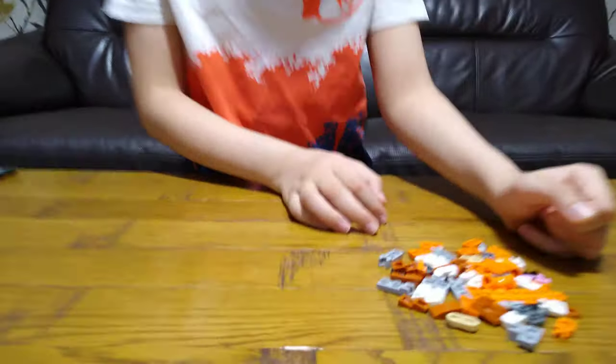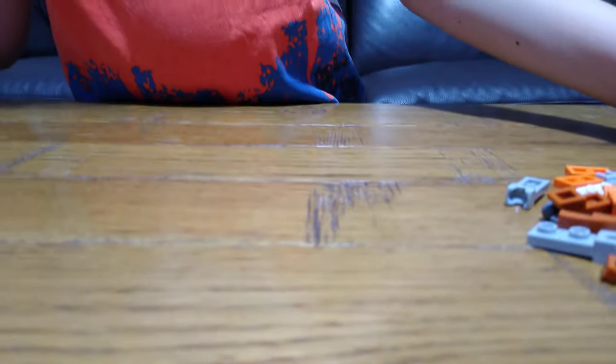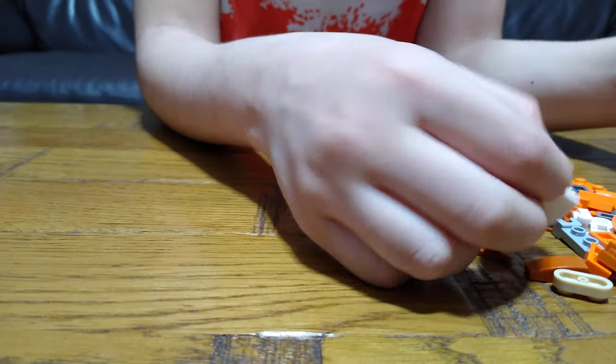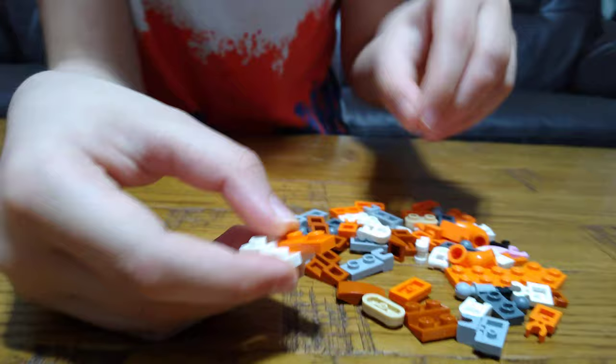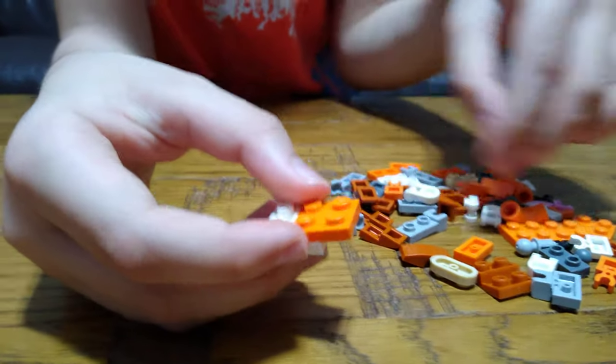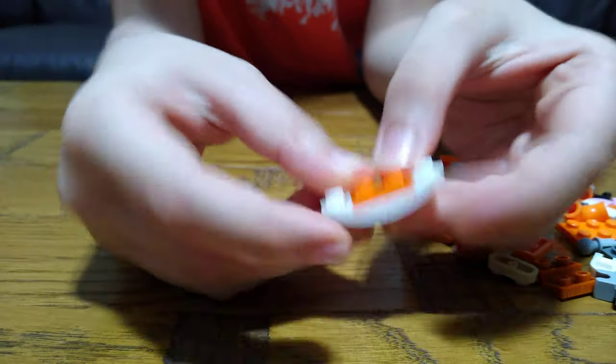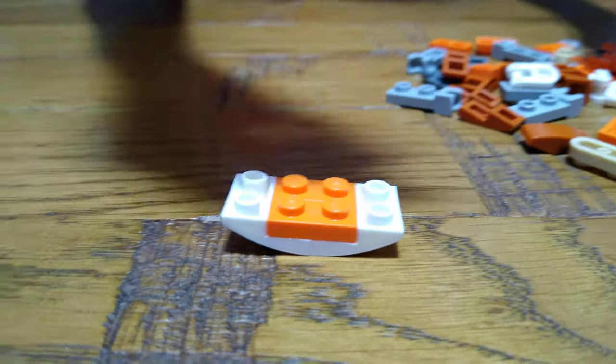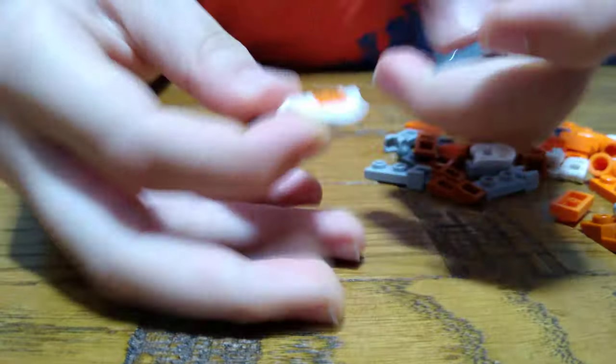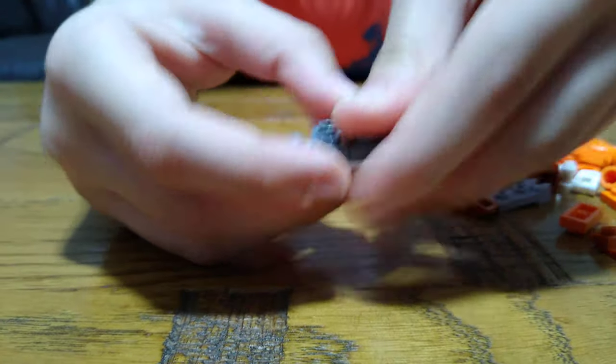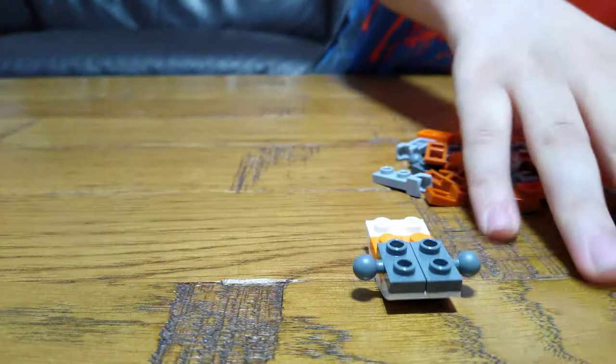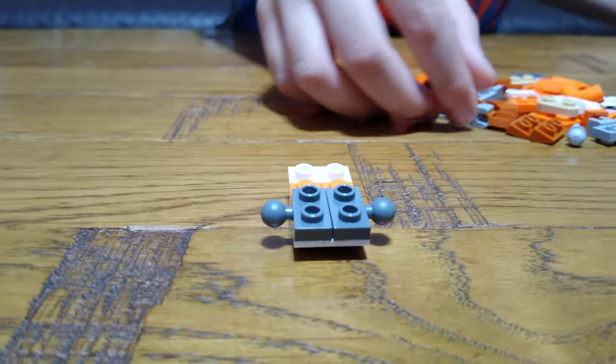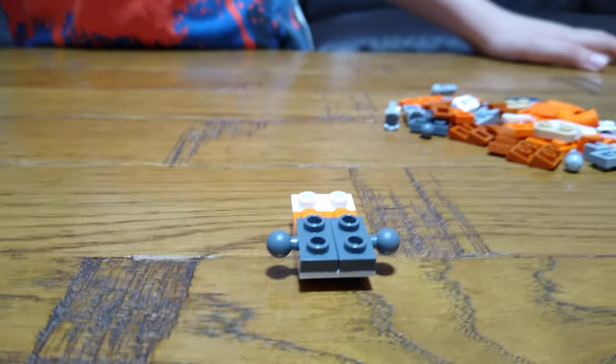So yeah, let's build the ostrich now. The first thing we will need is very simple. Just get two of these and two of these like that, two of these. If you didn't know, you can't actually get the instructions; you have to go on LEGO.com to get the instructions.